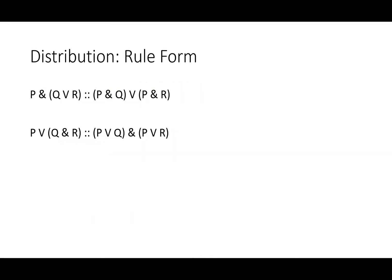Let's take a look at how this rule works. In the first rule, we notice 'P AND' on one side and 'Q OR R' on the other. When we do distribution, we take that 'P AND' and distribute it into 'Q OR R', giving us 'P AND Q OR P AND R'. All of the same information — P, Q, and R — and all the same relationships are represented, just slightly differently.